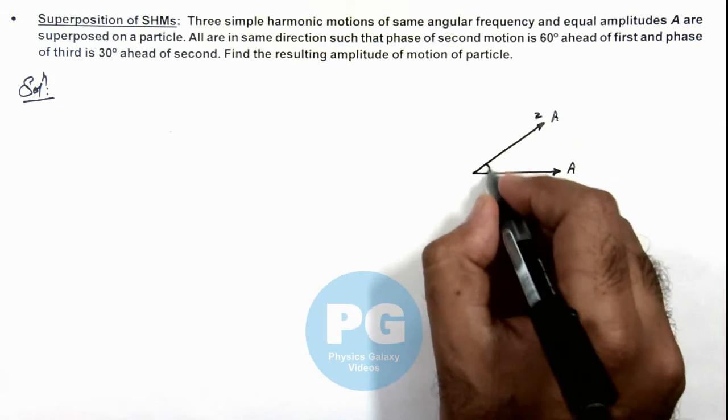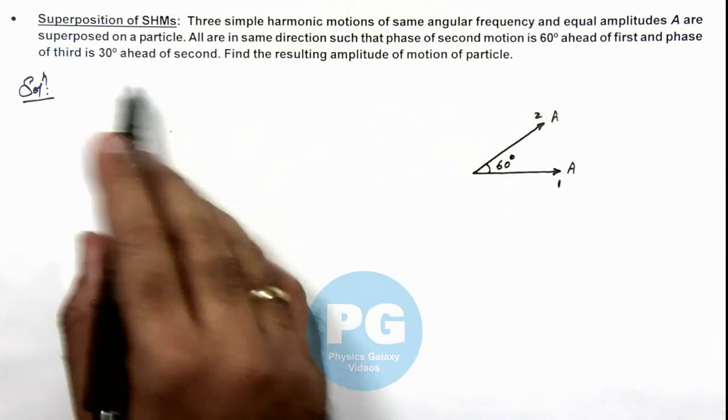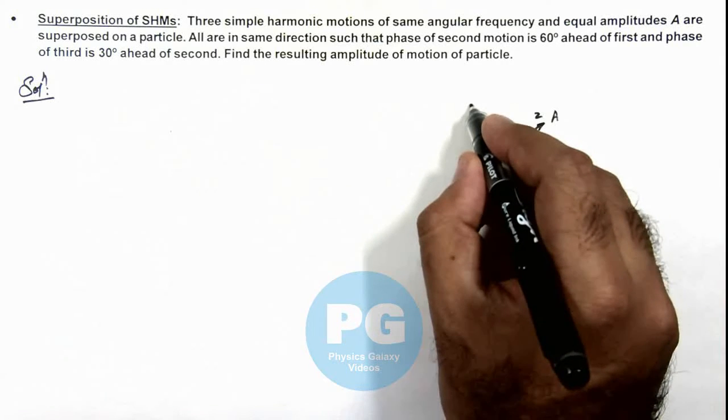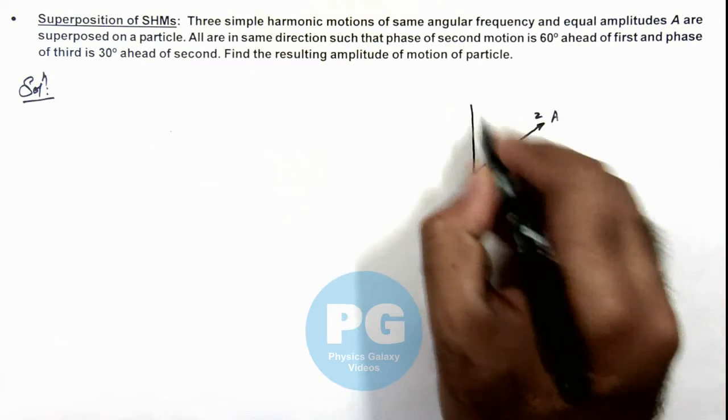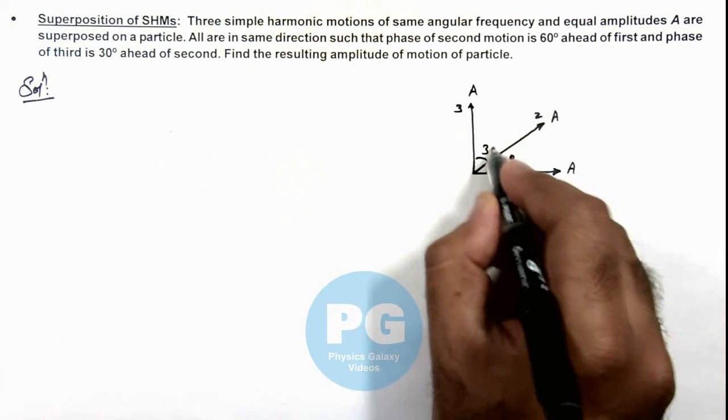Where the phase angle is 60 degree ahead. The third one is 30 degree ahead of second, that means the third one will be at right angle to the first one. So this is A for third SHM and this angle is 30 degree.